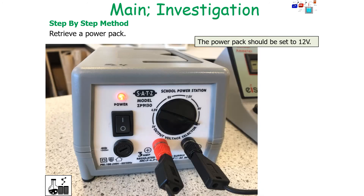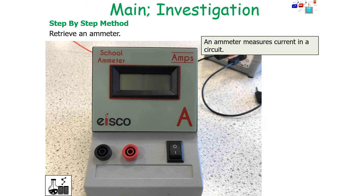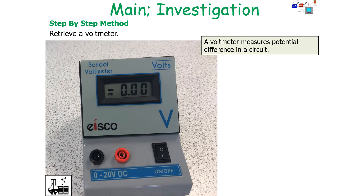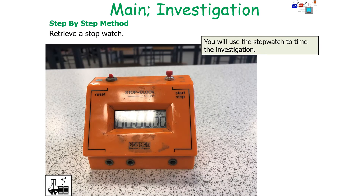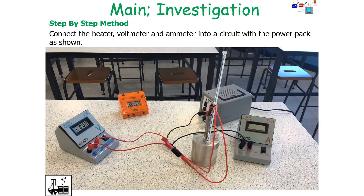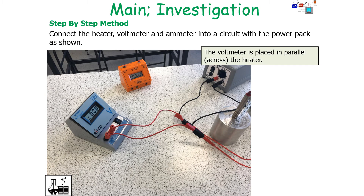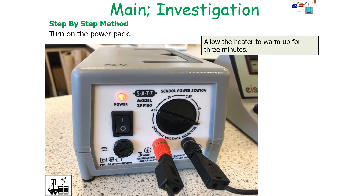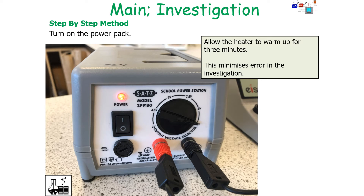You'll need a power pack and some electrical wires, setting your power pack to 12 volts. You retrieve an ammeter to measure current in the circuit — it's placed in series. You get a voltmeter, which measures potential difference, and it's placed in the circuit in parallel. You'll use a stopwatch to time the investigation. Connect the heater, voltmeter, and ammeter into a circuit with the power pack as shown. The voltmeter is placed in parallel across the heater — the device it is measuring — and the ammeter is placed in a series circuit. Turn on the power pack and allow the heater to warm up for three minutes, which minimizes error in the investigation.